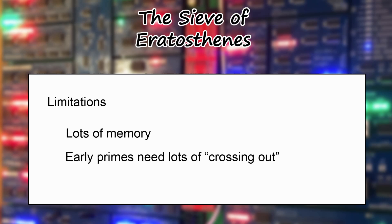The second big limitation is that the early primes require a lot of crossing out. When I implemented the sieve for my CPU, I wanted primes up to 65,536 — the 16-bit range. Using a byte per entry would require 64 kilobytes; using bits it would be 8 kilobytes of RAM, which is more reasonable. But for the first prime, 2, I'd need to cross out half that range — 32,768 iterations of a loop. That would mean a big delay between starting the algorithm and advancing from 2 to 3, which wouldn't be very interesting.